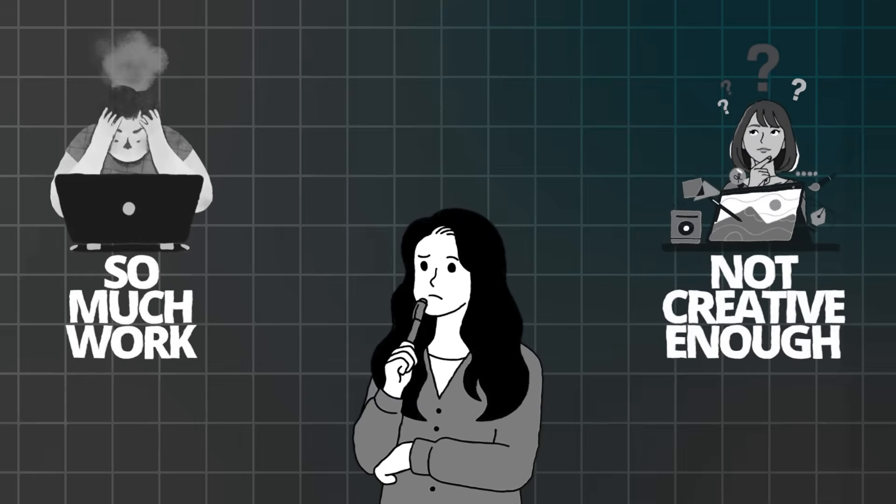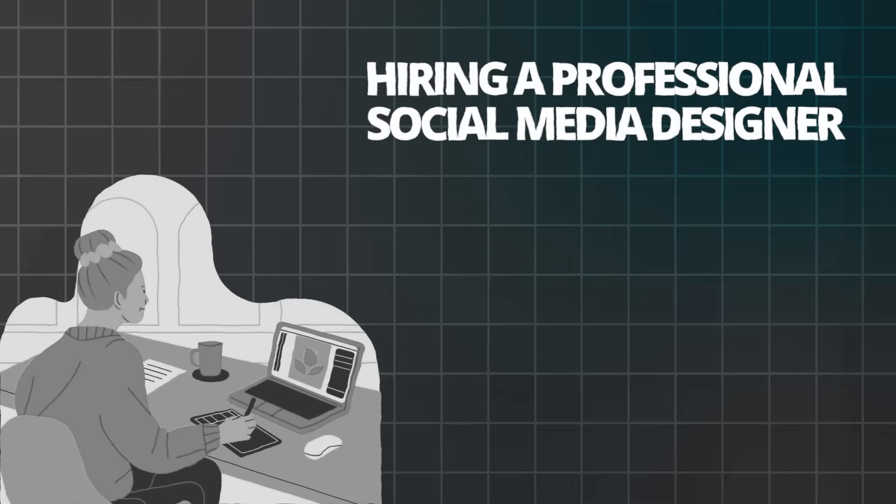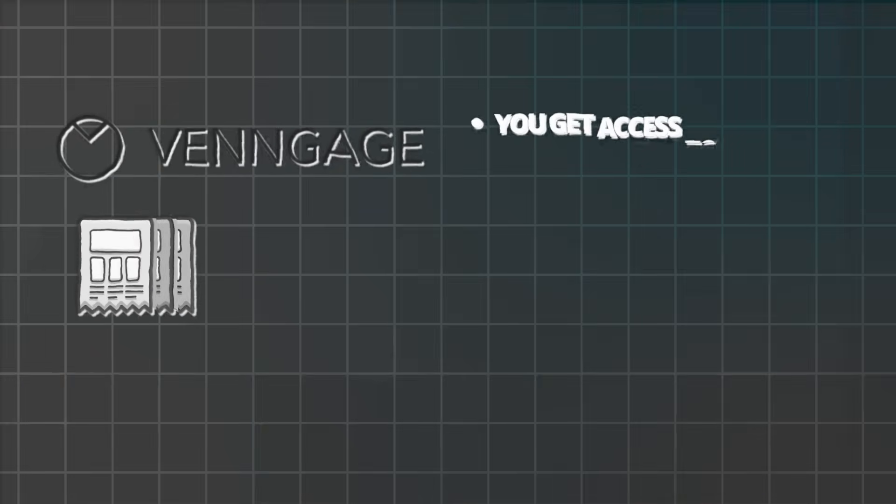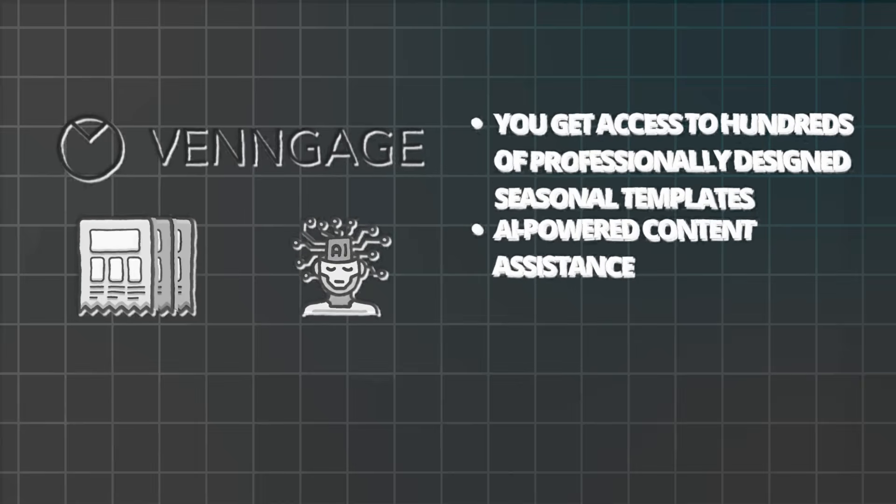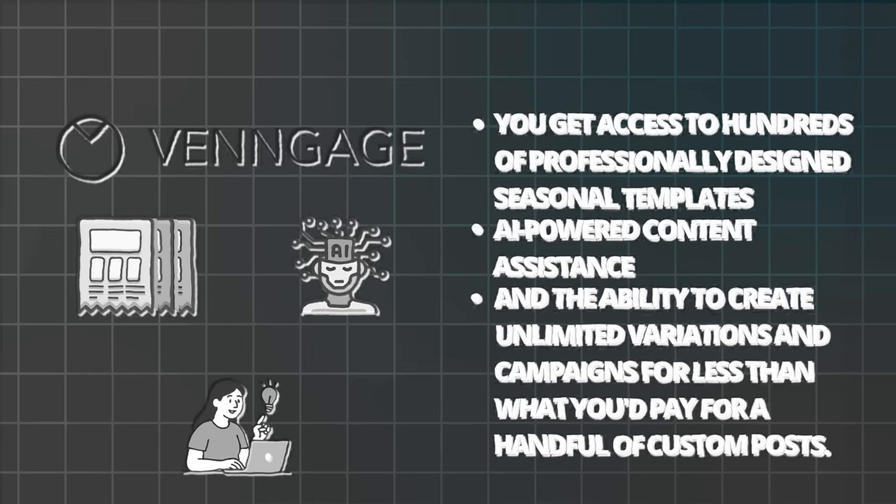I know some of you might be thinking this sounds like so much work, or I'm not creative enough to plan content this far ahead — I totally felt the same way. But here's the reality: hiring a professional social media designer for seasonal content typically costs $50 to $200 per post, and a full seasonal campaign runs $1,000 to $5,000 per season — that's potentially $20,000 per year just for seasonal Instagram content. With Venngage, you get hundreds of professionally designed seasonal templates, AI-powered content assistance, and unlimited variations for less than the cost of a handful of custom posts. You can update and reuse content year after year, and the learning curve is far more manageable than mastering complex design software.